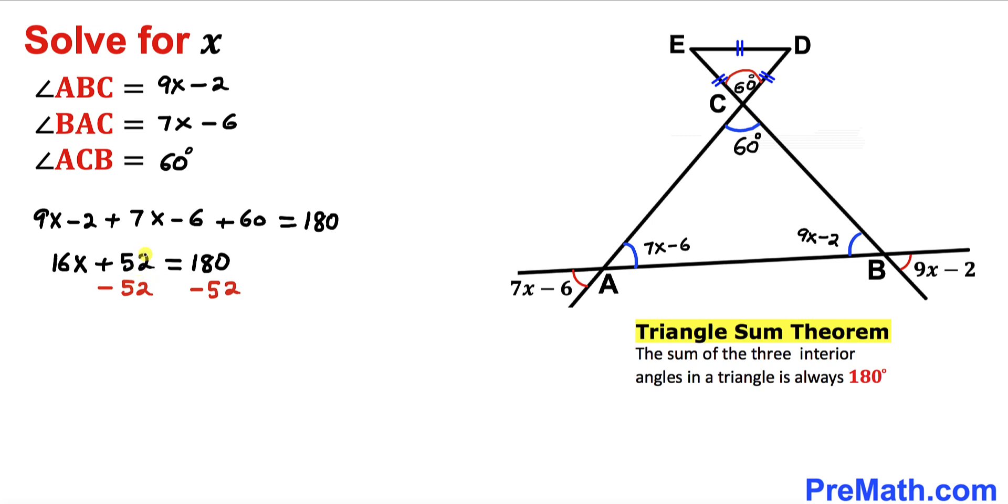Let's subtract 52 from both sides. This is gone, so therefore our 16x turns out to be 128 degrees. Let's divide both sides by 16 degrees.